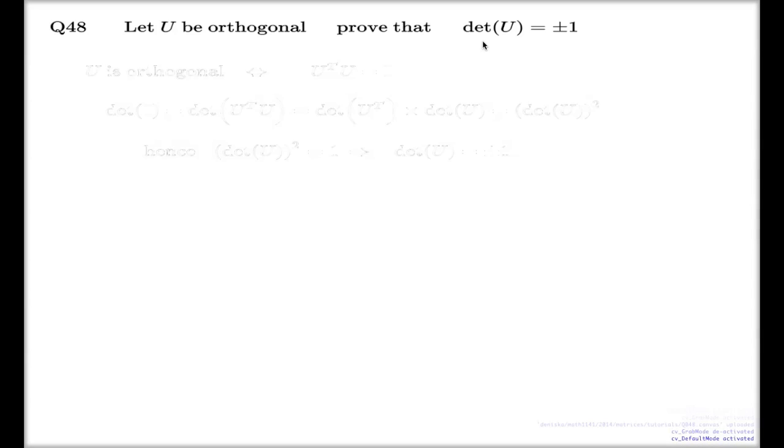But the question itself says if U is orthogonal matrix, we need to show that for such a matrix the only option for the determinant is to be plus or minus one.